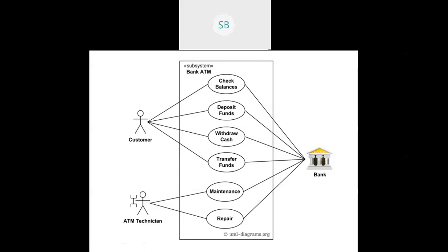The customer needs to perform functionalities like withdrawing money and checking balance. The bank is involved because it is directly linked — it is the one providing the money. The ATM technician is involved because someone needs to do regular checkups: whether money is available in the machine and whether it's working properly. So these are the three actors we have.